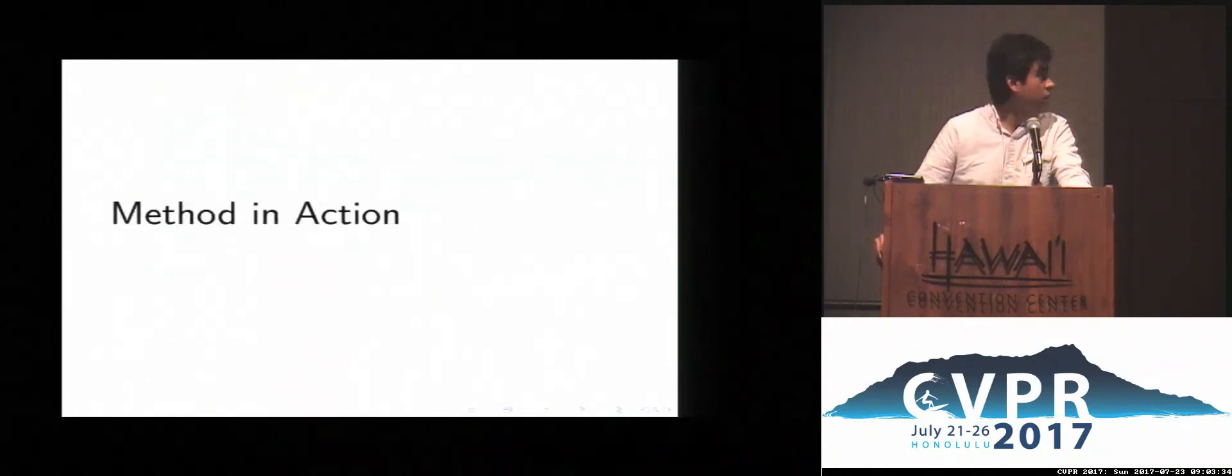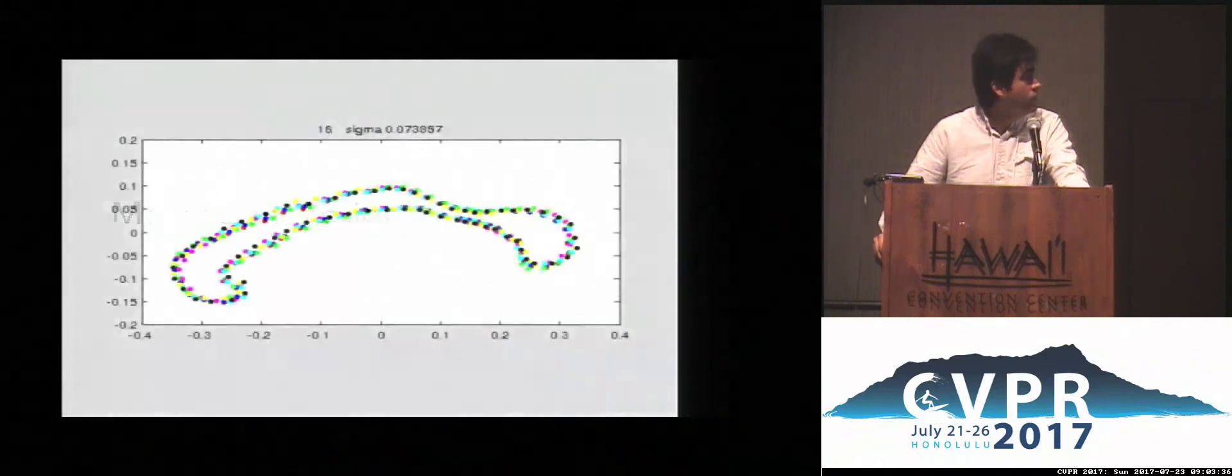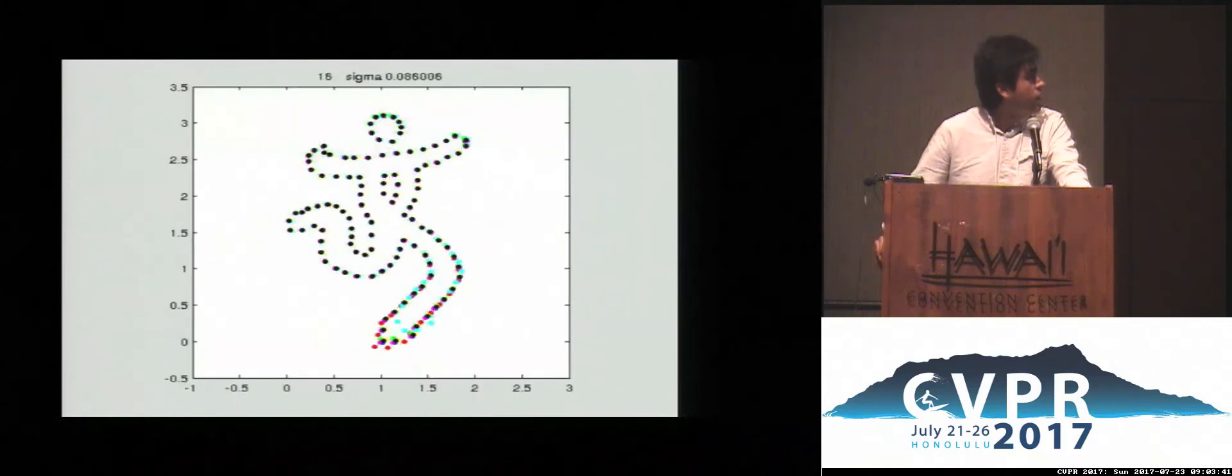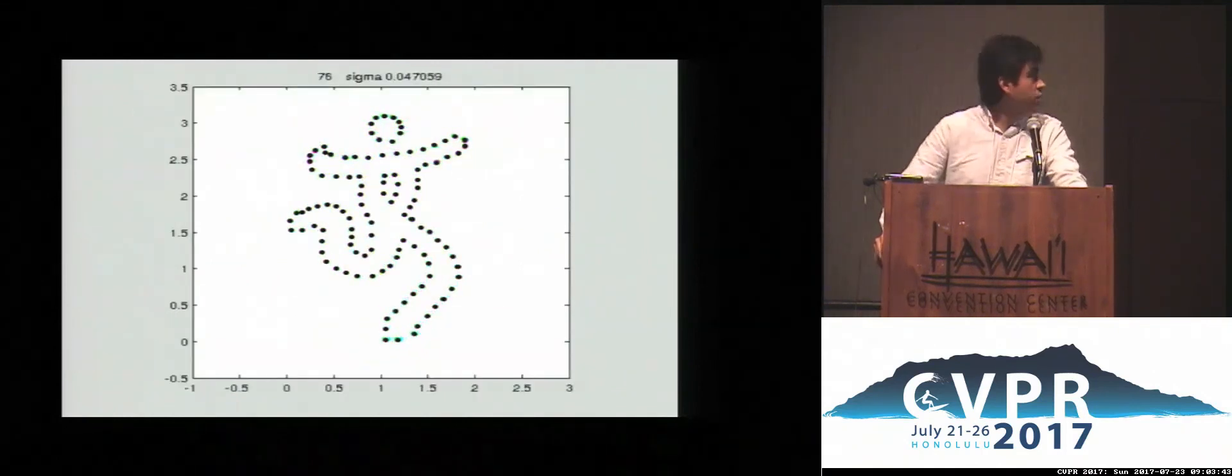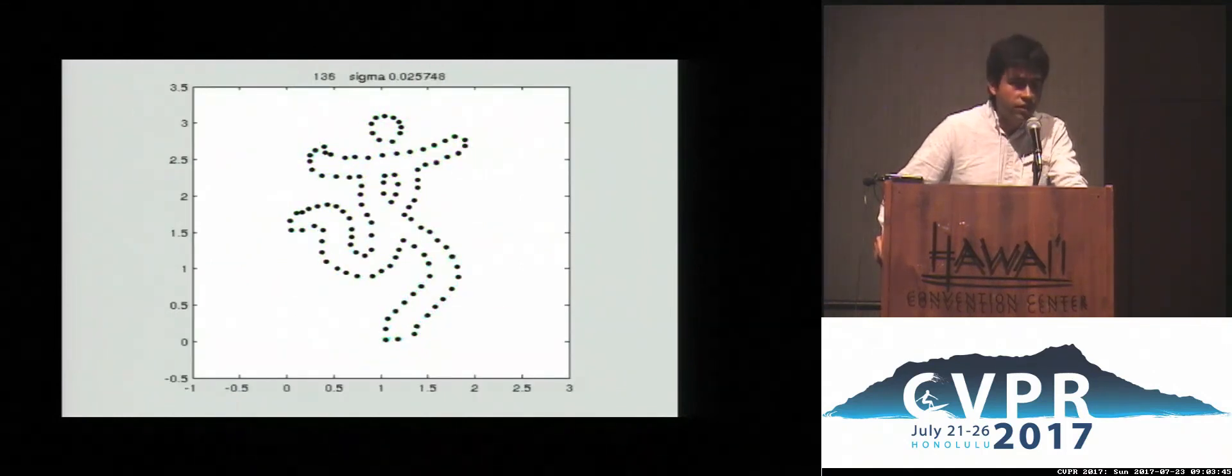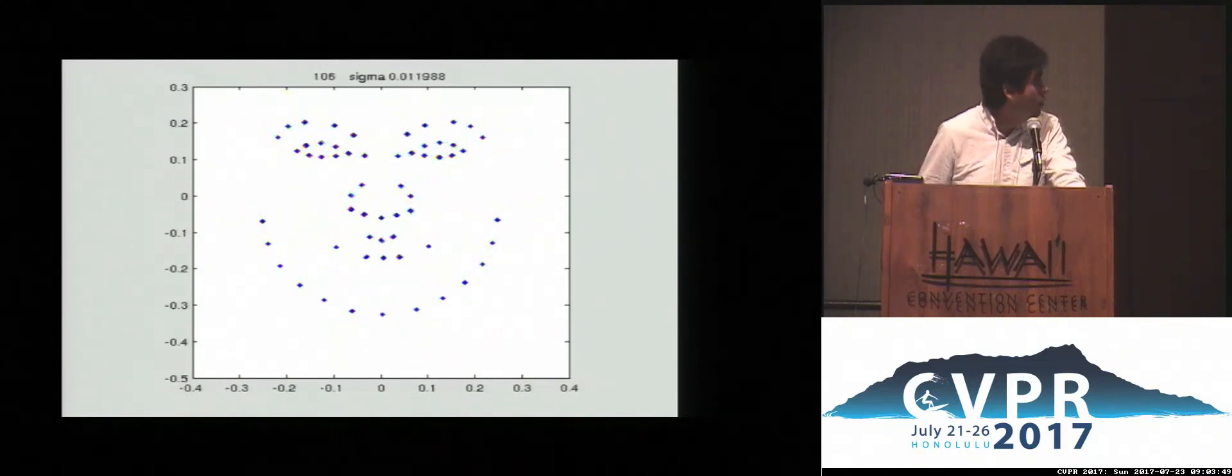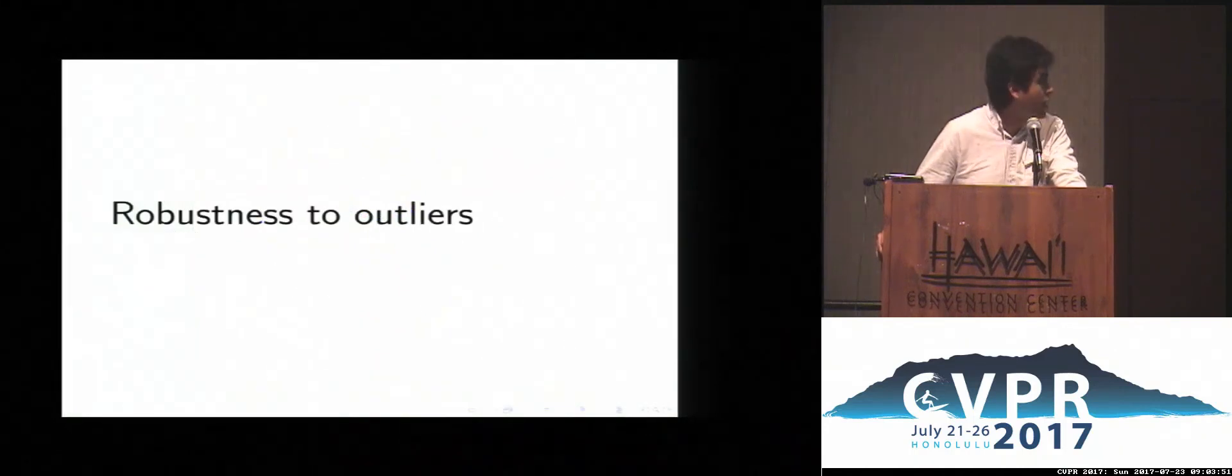So let's see the method aligning multiple features. As we can see, with this method we are able to align multiple shapes simultaneously. There is no explicit template, so all the point sets align to the same.